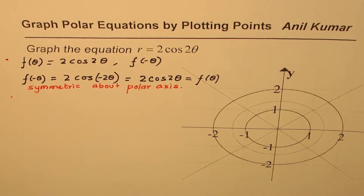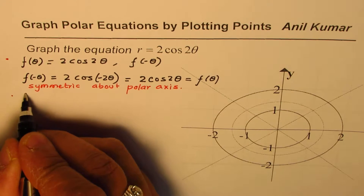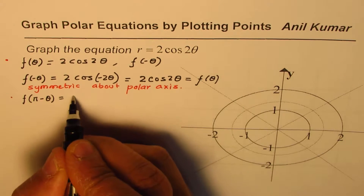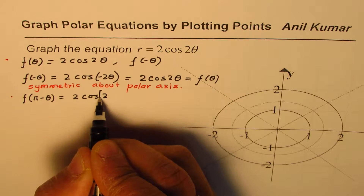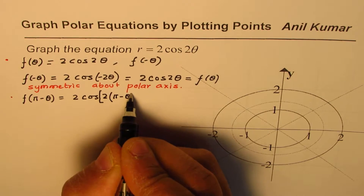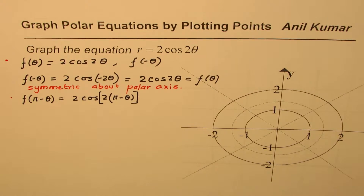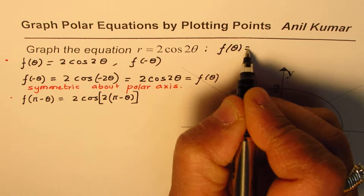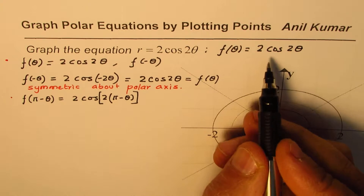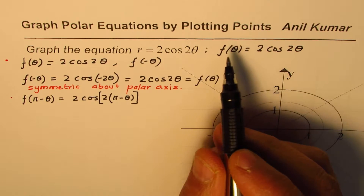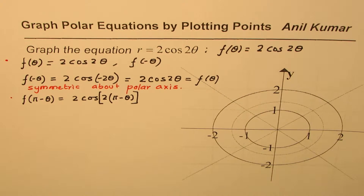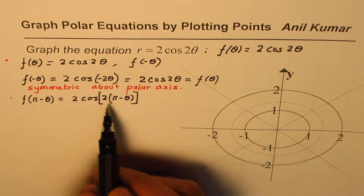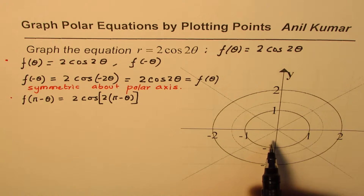Let us also consider other symmetries. We check f(π − θ) to test symmetry about the vertical y-axis. Replacing θ with (π − θ), we get 2 cos[2(π − θ)] = 2 cos(2π − 2θ). Since cosine has a period of 2π, cos(2π − 2θ) = cos(2θ), so f(π − θ) = 2 cos 2θ = f(θ). This tells us the function is also symmetric about the y-axis.